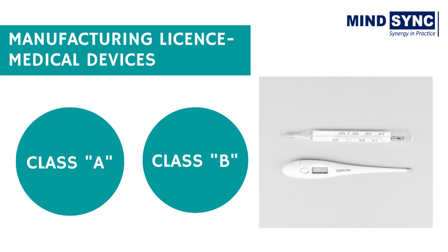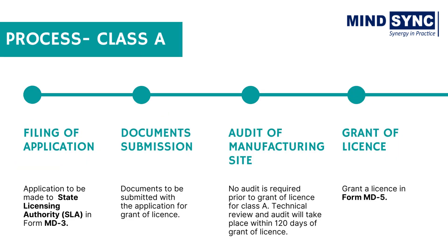Moving forward, I am going to tell you the complete process of obtaining a manufacturing license for Class A and B medical devices. Process for Class A medical devices: the first step is filing of application — application is to be made to the state licensing authority in Form MD3. Next is documents submission, to be submitted along with the application by the manufacturer. The next step is audit of the manufacturing site — no audit is required prior to grant of license for Class A medical devices; technical review and audit will only be conducted within 120 days of grant of license. And finally, grant of license — a license is granted to the manufacturer of Class A medical devices in Form MD5.